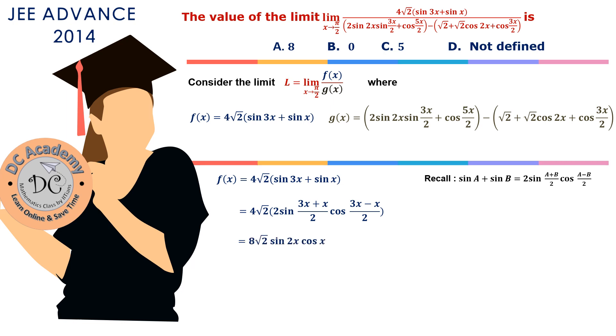Now notice that sin 2x can be expanded using the formula sin 2x = 2 sin x cos x. So therefore, f(x) becomes 16√2 sin x cos² x. We just keep it as it is.